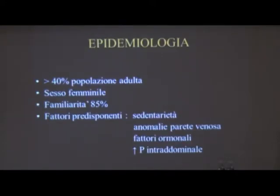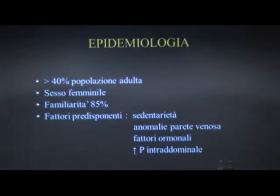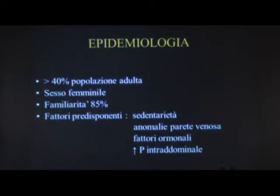Epidemiologia: il 40% della popolazione adulta è interessata, con prevalenza del sesso femminile e familiarità nell'85% dei casi. I fattori predisponenti sono la sedentarietà, anomalie della parete venosa, fattori ormonali e l'aumento della pressione intra-addominale, quali situazioni fisiologiche come la gravidanza oppure patologiche come i tumori del cavo addominale.